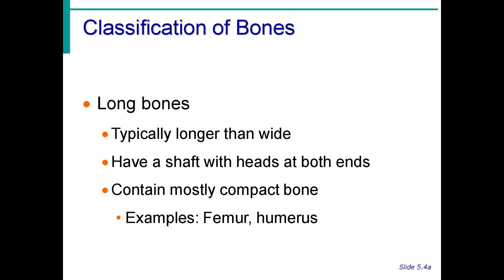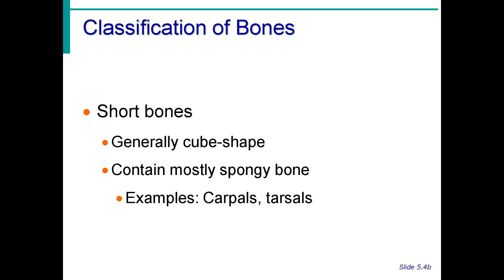In the classification of bones, we have long bones and short bones. Long bones are typically longer than they are wide, have a shaft with heads at both ends, and contain mostly compact bone. Examples include the femur and humerus — the femur is the longest bone in the body. Short bones are generally cube-shaped and contain mostly spongy bone. Examples are the carpals and tarsals.